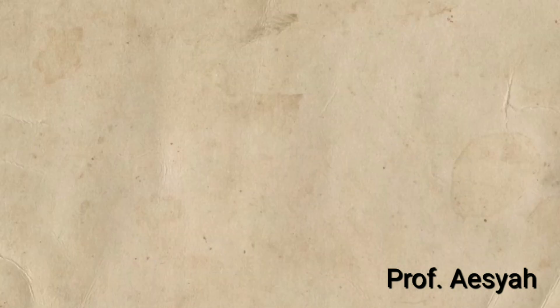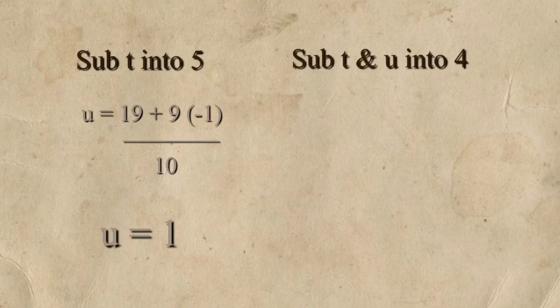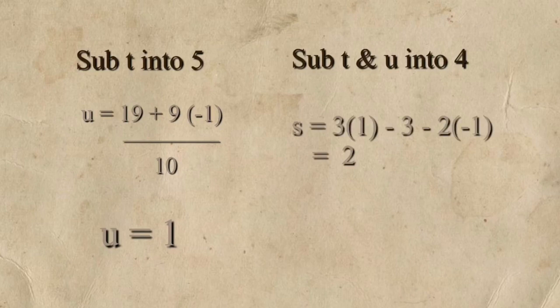Last but not least, we're going to find the values of the other unknowns by substituting what we know as t into equation 5, then calculate that, and we'll find u equals to 1. After we find u, we substitute both u and t into equation 4, calculate that, and then in the end, we'll have the answer for the value of S, that is 2.